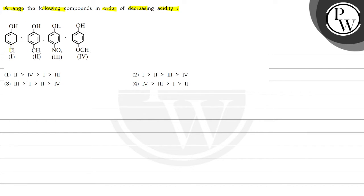In the first structure, chlorine is attached at the para position of phenol. In the second, a methyl group is at the para position. In the third, a nitro group is attached. And in the fourth, a methoxy group is attached at the para position of phenol.